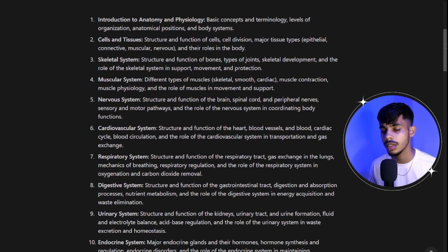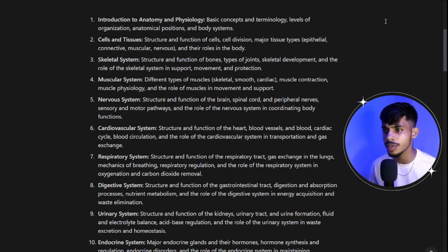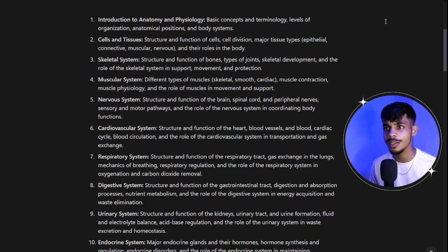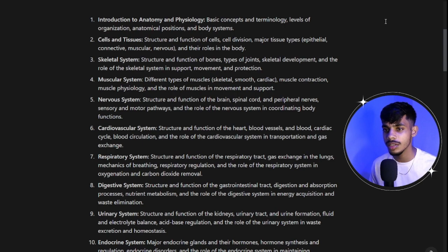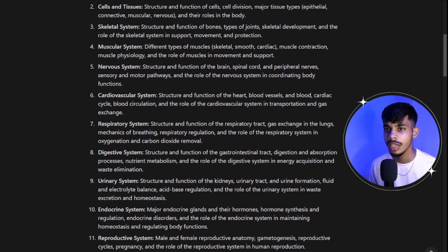We will first look at the important topics to cover. Starting with introduction to anatomy and physiology — here you will understand the basic concepts and terminologies, levels of organization (a group of cells makes a tissue, a group of tissues makes organs, and a group of organs makes organ systems), anatomical positions, and body systems.